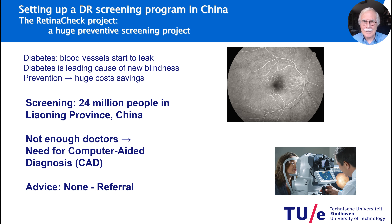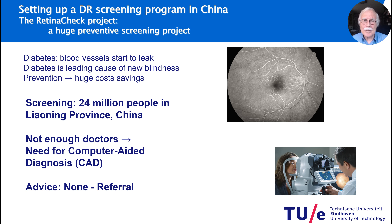With diabetes, your blood vessels start to leak, and diabetes is therefore a leading cause of new blindness. If you can prevent this, it can lead to huge cost savings. Finally, 4% of the people will really go blind if you don't take sufficient measures. So it was decided to set up a screening program for the elder half of a population in Liaoning province in northeast China — 24 million people. That number is so staggering that there were not enough doctors, so there was a need for computer-aided diagnosis.